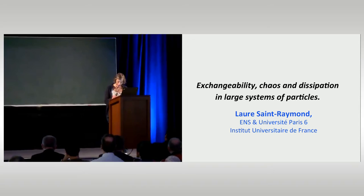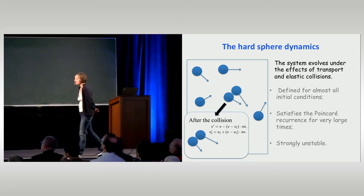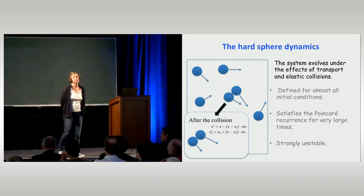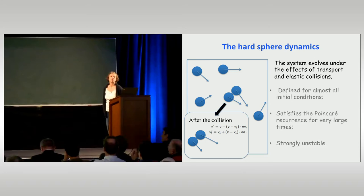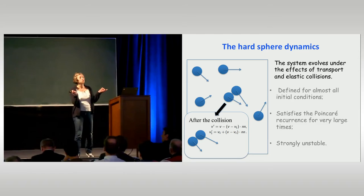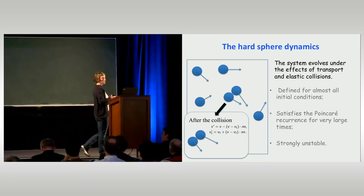Let me introduce this simple system. This is the simplest possible system of particles that you may think about. If you would like to model a gas at the atomistic level, it just consists of N hard balls, solid balls. They just move in straight lines — the derivative of position is just the velocity — and this velocity is constant until you have two particles which collide.